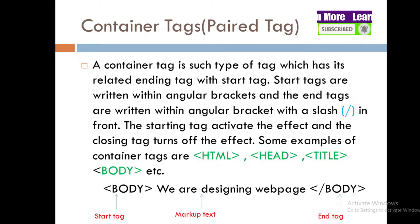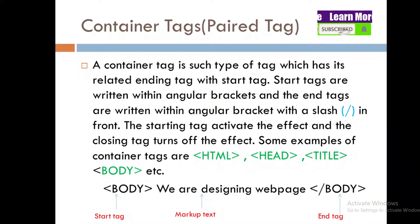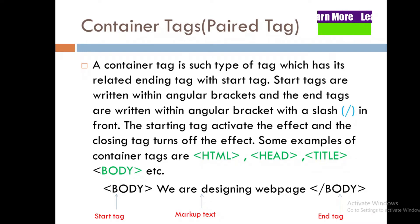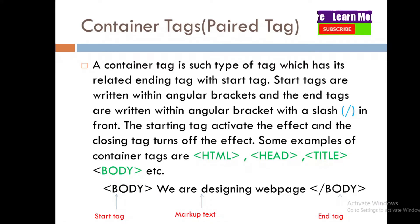A container tag is a type of tag that has a related ending tag. It comes with a start tag as well as an end tag. Start tags are written within angle brackets, and end tags are written in angle brackets with a forward slash.